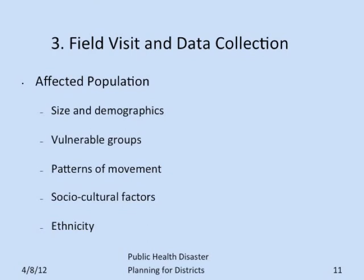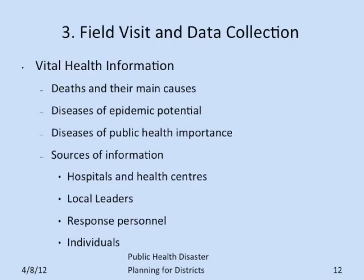Vital health information includes deaths and their main causes, both related to the disaster and other comorbidities existing, diseases of epidemic potential, diseases of public health importance like STDs, HIV/AIDS and maternal health conditions. Sources of this information could be hospitals and health centers, local leaders, response personnel and individuals directly or indirectly affected.